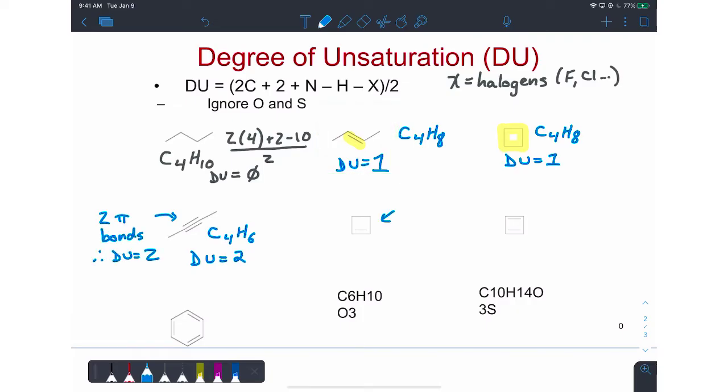In cyclobutene, one ring and one pi bond, so two degrees of unsaturation. One ring, two pi bonds, making a total of three degrees of unsaturation. You can confirm this by comparing back to the degrees of unsaturation formula.